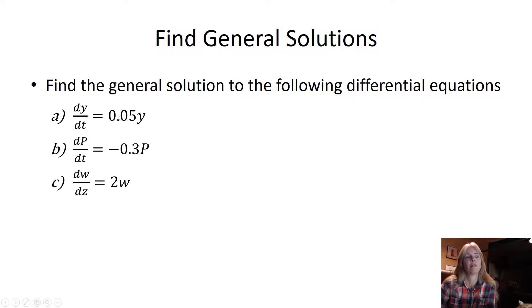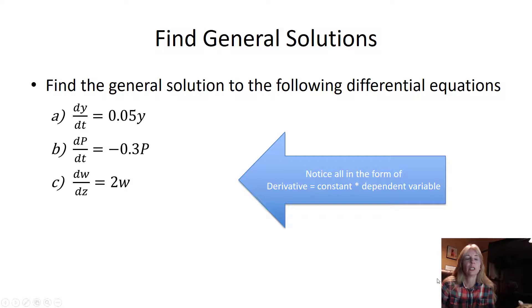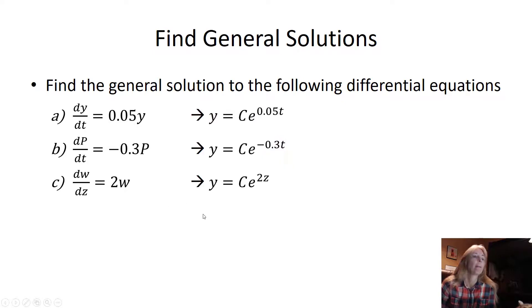I want to find the general solution to the following differential equations. This is where I said you will recognize, these are all the k times the function. Every one of these are k times the function. Notice that the variable here is the numerator, which is the function. So they all have this form, my constant times my dependent variable. And so I can write the solution for each one of these based on the c e to the kt, where this constant out front is my k on each one of them. So again, if I know the rate, my differential equation, I can automatically find my original function, my solution, and now use this for making predictions.